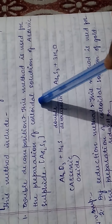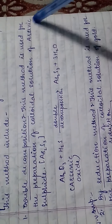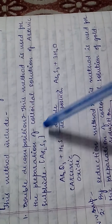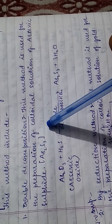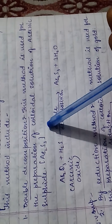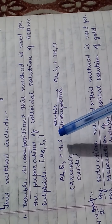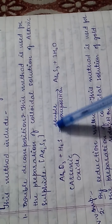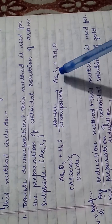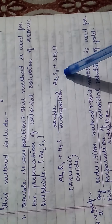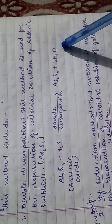First method under aggregation is double decomposition. This method is used for the preparation of colloidal solution of arsenic sulfide, As2S3. We react arsenic oxide with H2S. After double decomposition, we get As2S3 plus three particles of H2O.